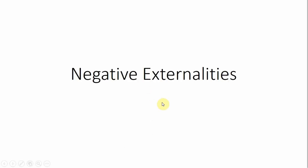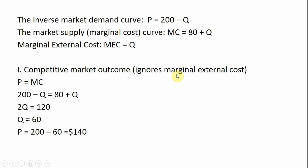Hello, in this video we're going to look at negative externalities. We got a market characterized by an inverse market demand curve of P equals 200 minus Q.